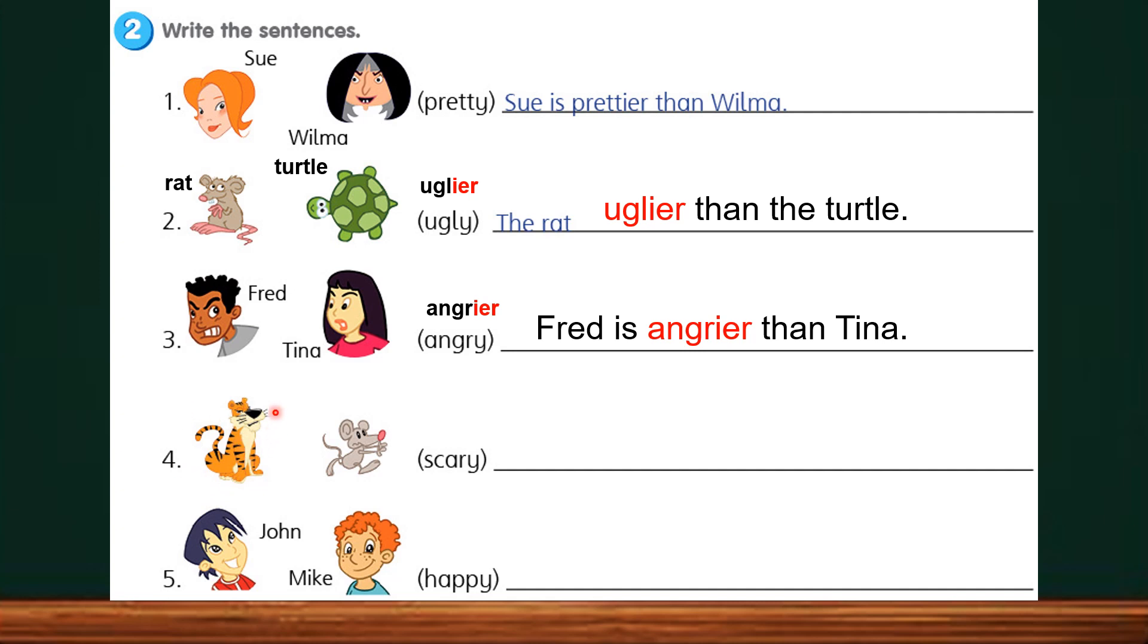Question 4. This is a tiger. And this is a mouse. The comparative adjective for scary is scarier. S-C-A-R-I-E-R scarier. So which animal is scarier? Correct is tiger. The tiger is scarier than the mouse.